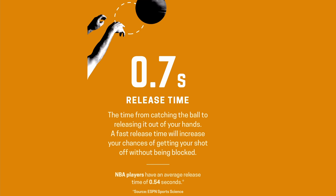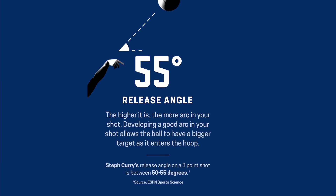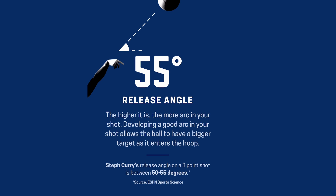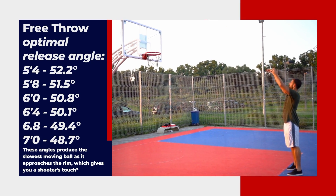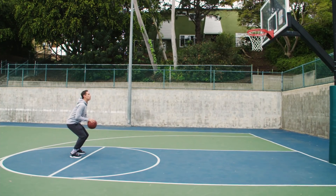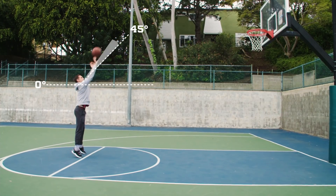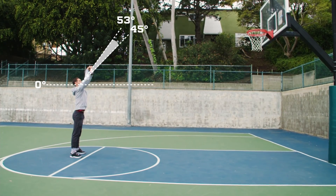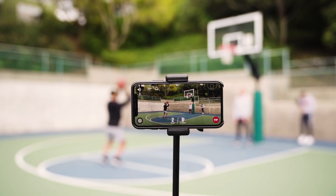The release time is the time from catching the ball to releasing it out of your hands. The release angle is the angle at which you release the ball — depending on your height, this also determines the most optimal release angle. Listen to Larry Silverberg, a professor who studies motion at North Carolina State, explain the optimal release angles: there's an optimum angle, which is actually the least effort angle, that tends to be anywhere between 45, 46, and 53 degrees depending on your height.